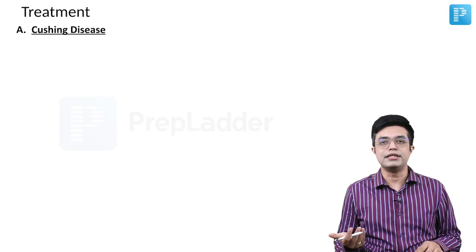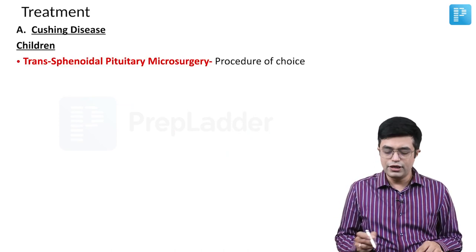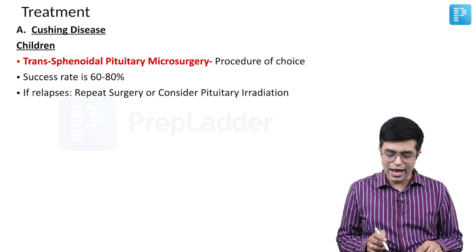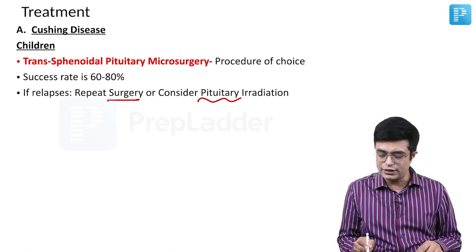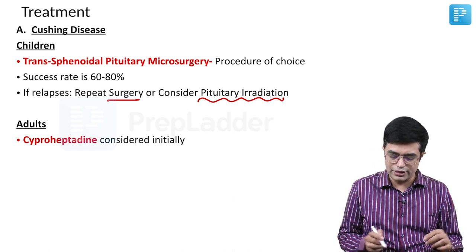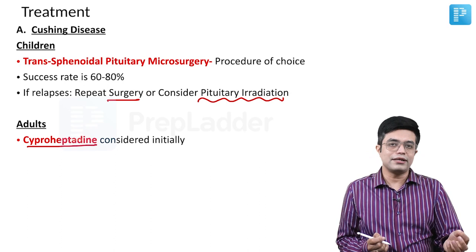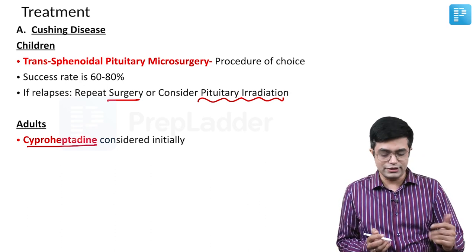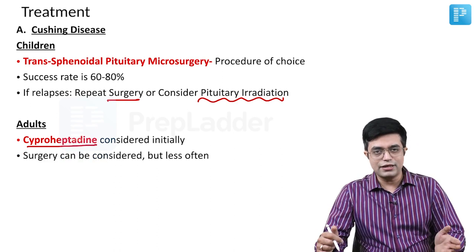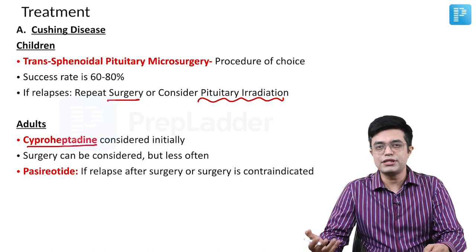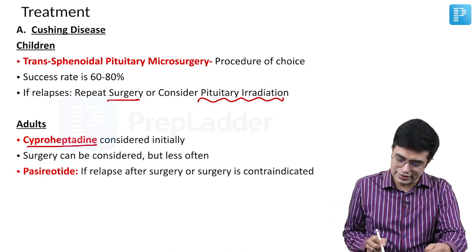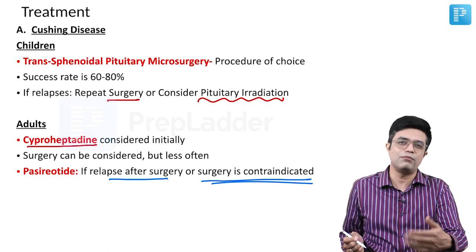For treatment: if it is Cushing disease (pituitary adenoma), trans-sphenoidal pituitary microsurgery is the procedure of choice in children, with a success rate of 60–80%. If it relapses, consider repeat surgery or pituitary irradiation. In adults, ciproheptadine — a serotonin antagonist that reduces ACTH production — is sometimes tried first, though it has a high relapse and failure rate. Pasireotide, an octreotide analog, is a newer approved drug for relapses post-surgery or when surgery is contraindicated.